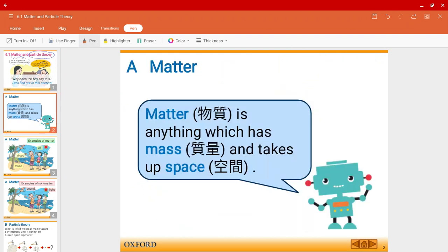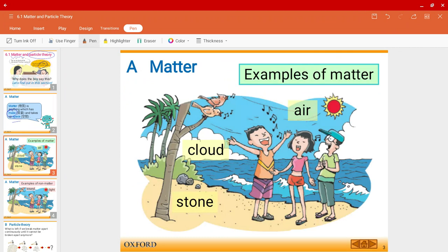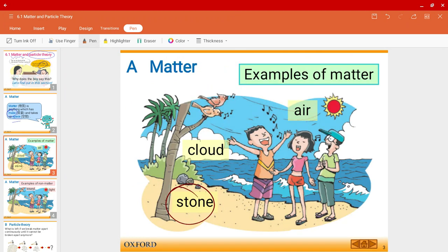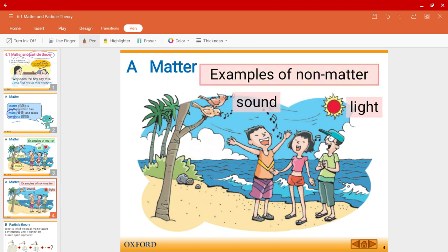matter is anything which has mass and it takes up space. For example, some examples of matter could be stones, the clouds, air, basically anything that could take up space and has mass. So some examples of non-matter are sound or light.